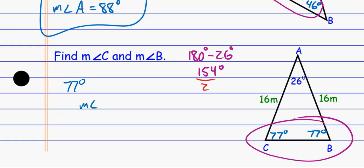And so this one, the measurement of angle B was 77 degrees, and of course the measurement of angle C has to be the same, so it's also 77 degrees.